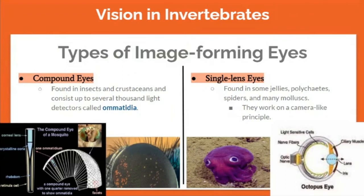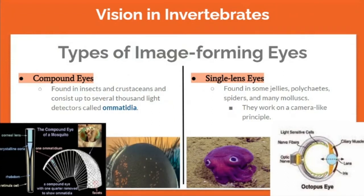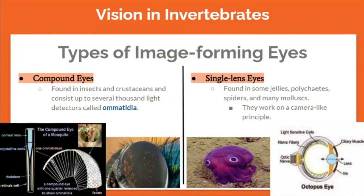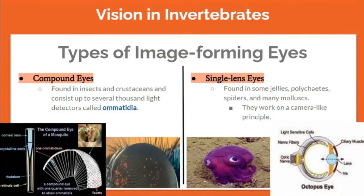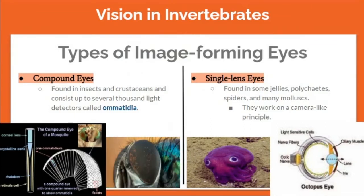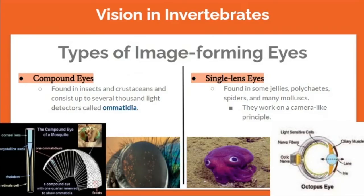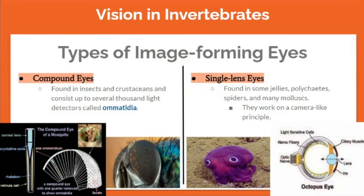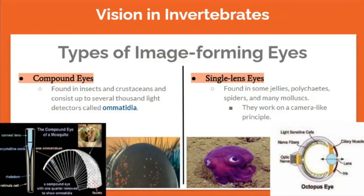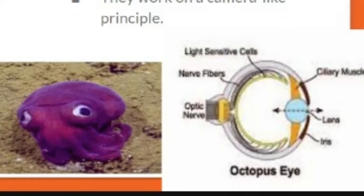Types of image-forming eyes: we have compound eyes and single-lens eyes. Compound eyes are found in insects and crustaceans and consist of up to several thousand light detectors called ommatidia. Single-lens eyes are found in some jellies, polychaetes, spiders, and many mollusks, and they work on a camera-like principle.